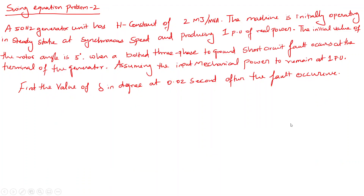In the continuation of last class, we will see the second problem of the swing equation. The question gives a 50 hertz generator unit with an H constant of 2 MJ per MVA. The machine is initially operating in steady state at synchronized speed, producing 1 per unit of real power. The initial value of rotor angle is 5 degrees. When a 3-phase to ground short circuit fault occurs at the terminal of the generator, assuming input power remains at 1 per unit, find the value of delta in degrees at 0.02 seconds after fault occurrence.